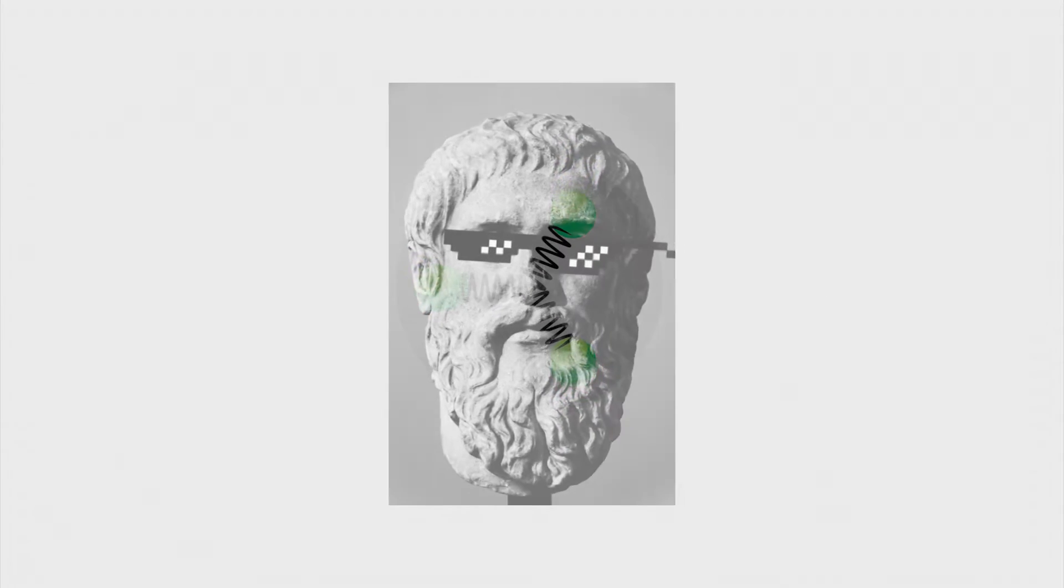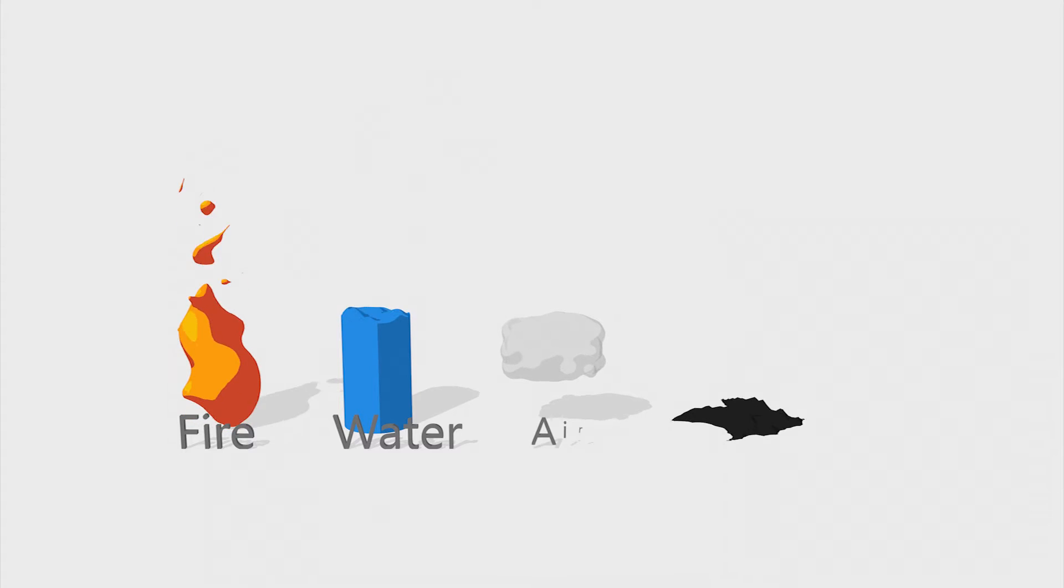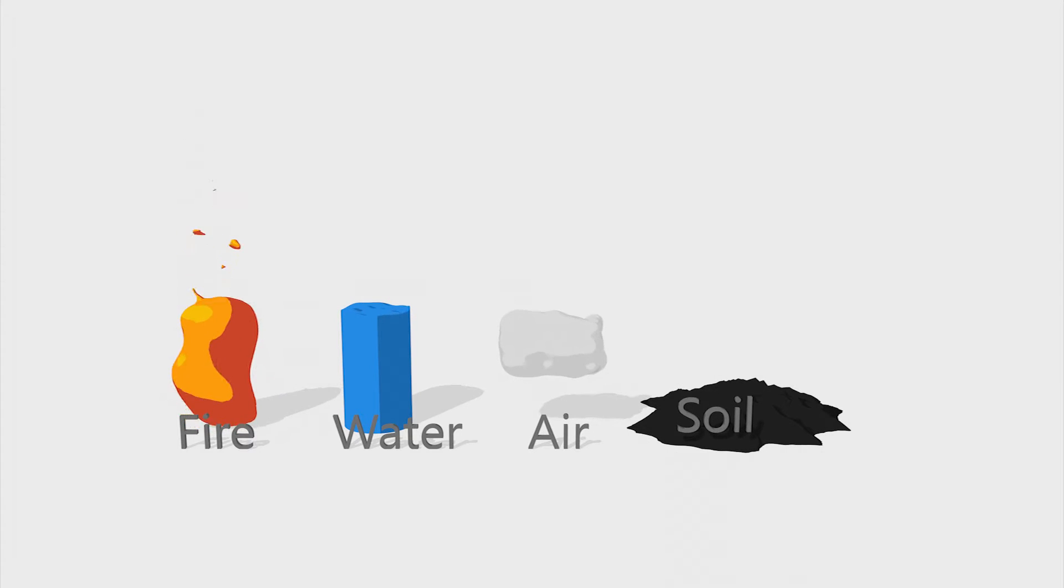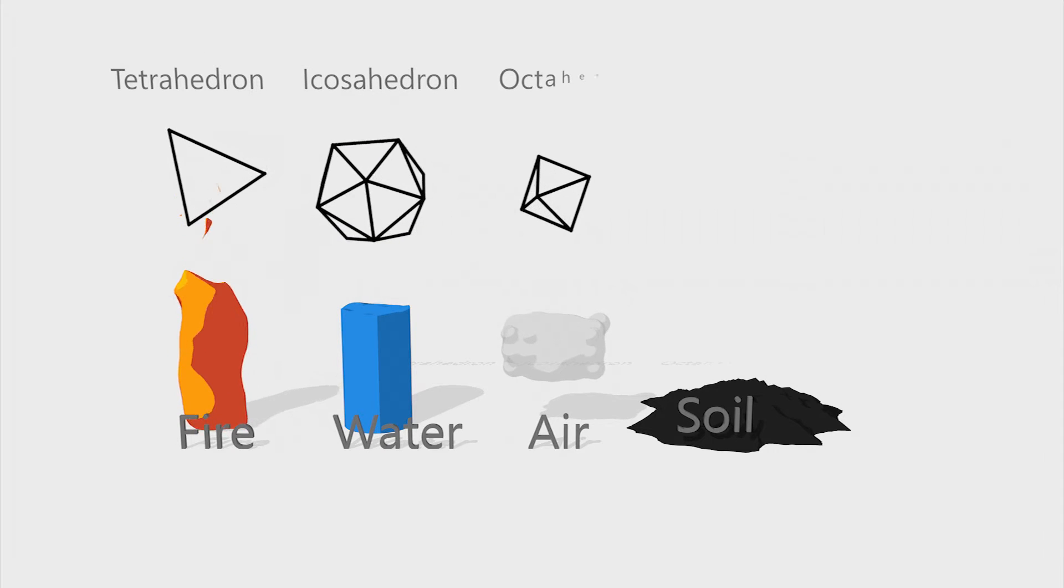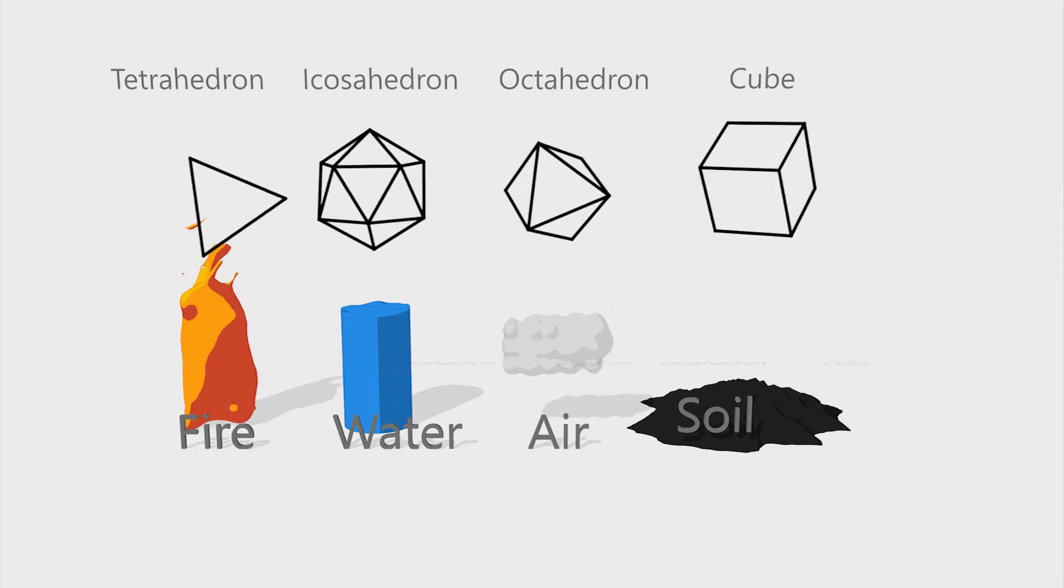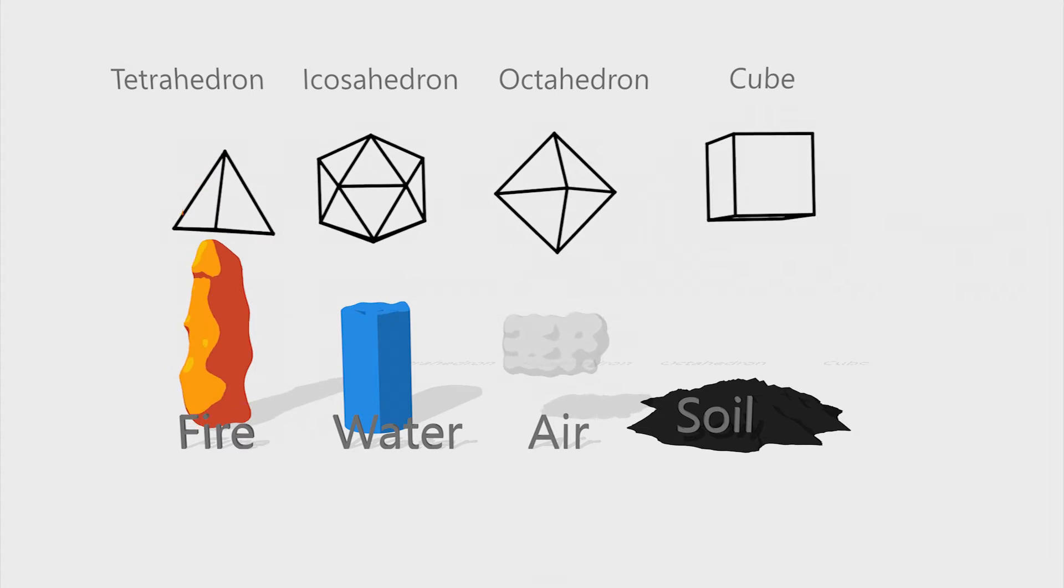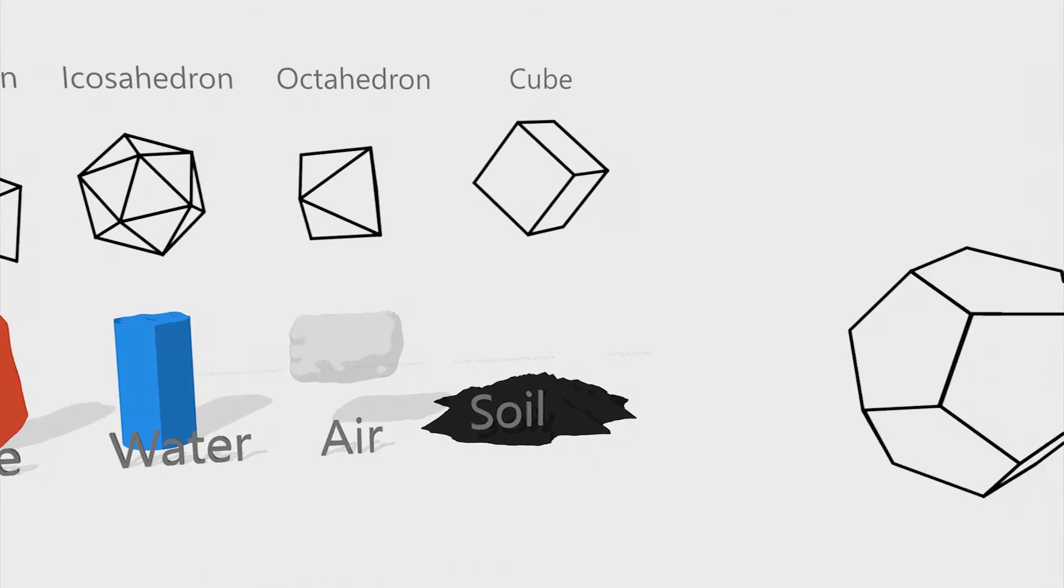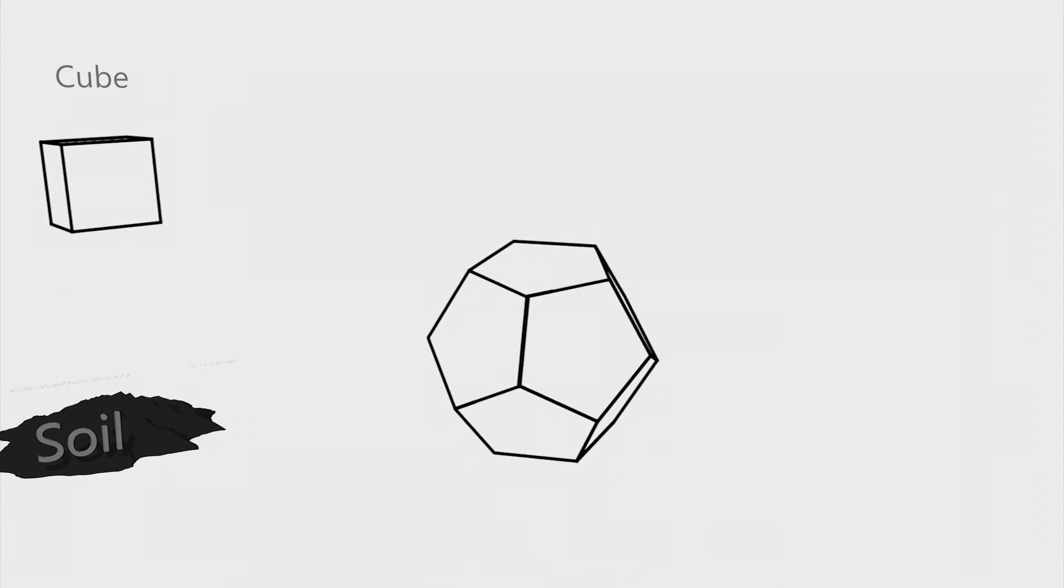Then another Greek philosopher, Plato, pushed the idea further. He thought matter is a mix of different elementary elements: fire, water, air, and soil. Each element related to a 3D geometric figure: the tetrahedron for fire, icosahedron for water, octahedron for air, and finally the cube for soil, and then something to represent the universe slash the ether, the dodecahedron.